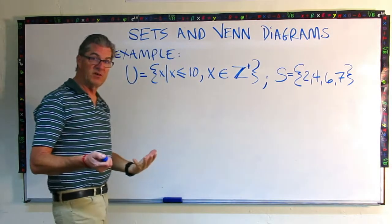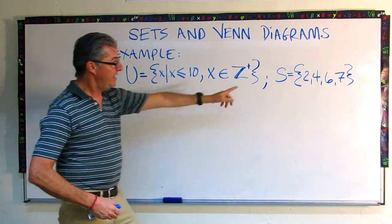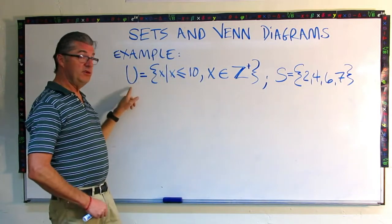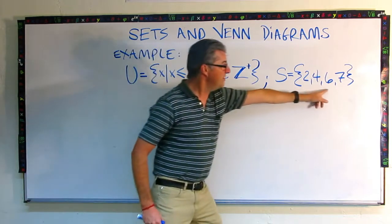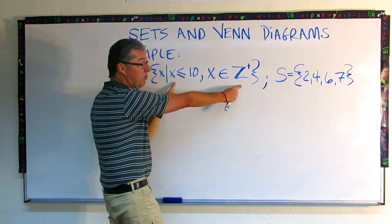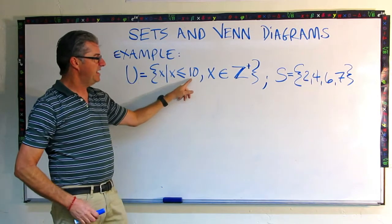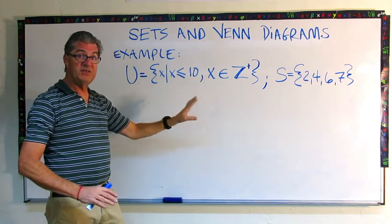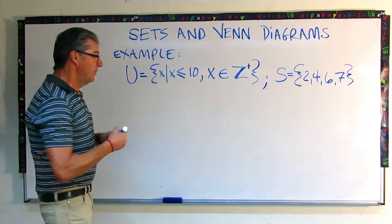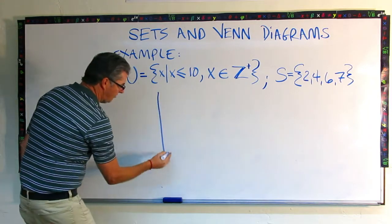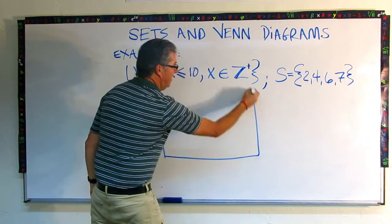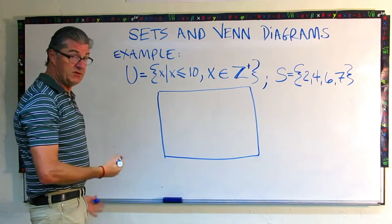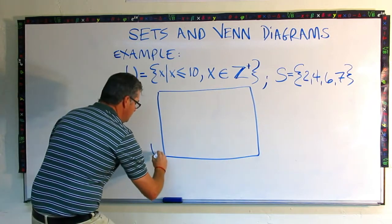So we can already see that S is entirely contained within our universal set because all these numbers fit this requirement. They're less than or equal to 10 and they're a member of the positive integers. So we have a good setup to draw a nice Venn diagram. So our first thing here, let's draw our rectangle. And I recommend make these big. Give yourself some room. Paper's cheap. I'm going to draw my U here.